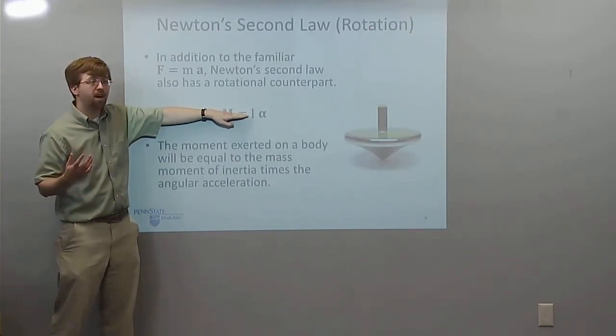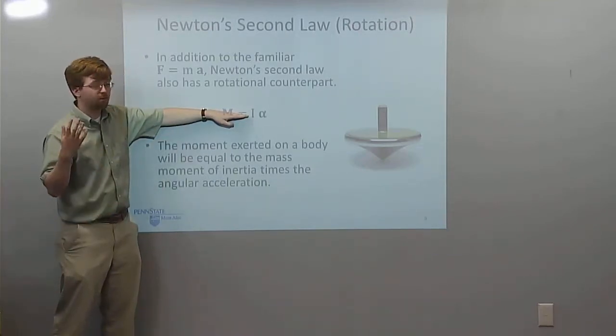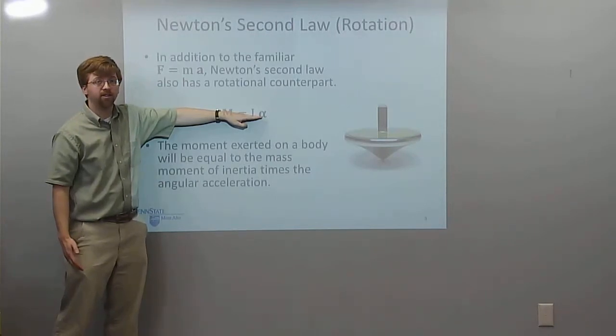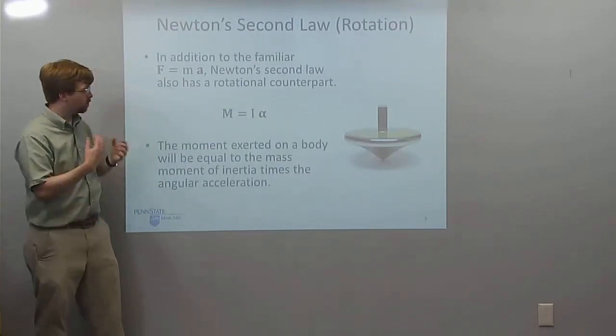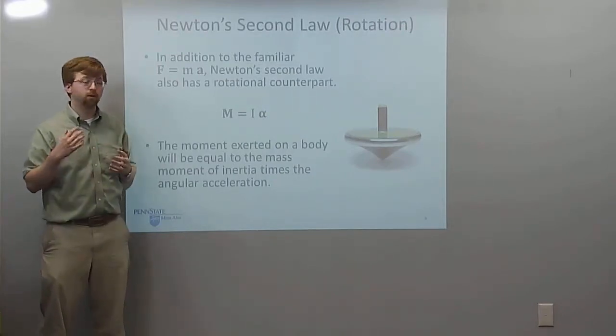That's our value for I. That's a property of the body being spun, such as that top over there, just like mass would be. And alpha is going to be our angular acceleration. So if I know these three quantities, I can relate them just like I can for F equals ma.